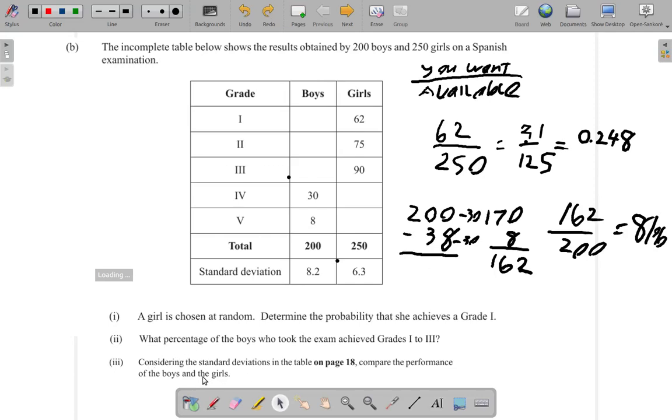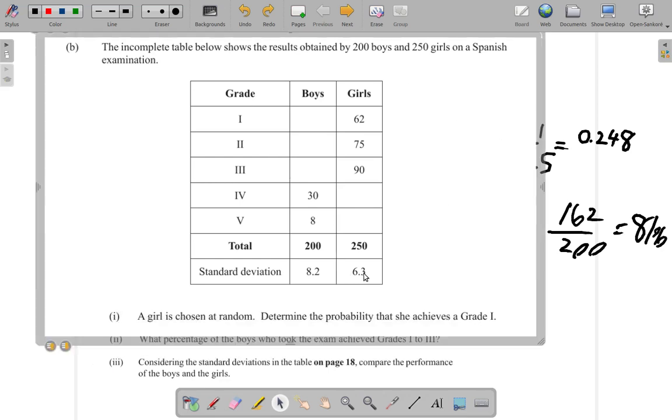Now, part 3 says, considering the standard deviations in the table on page 18, compare the performance of the boys and the girls. So, you consider the standard deviations, alright?